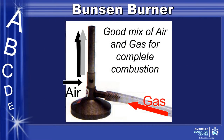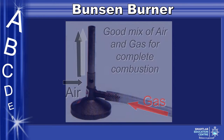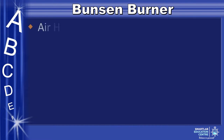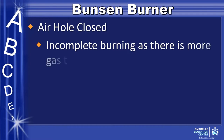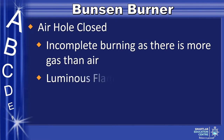In a Bunsen burner, as seen in the diagram below, there has to be a good mix of air and gas for complete combustion. When the air hole is closed, there is incomplete burning as there is more gas than air. There is also a luminous flame, where it is orange.